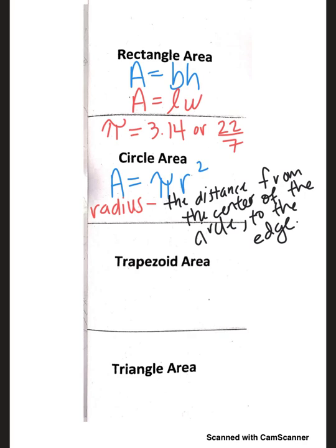Now we are looking at trapezoids. The formula for the area of a trapezoid is: area equals one-half times base one plus base two. If you're worried about having to memorize that, don't worry — it'll all be given to you. On the STAR test they're going to give you all these formulas. This foldable is going to stay in your notebooks for this entire unit.